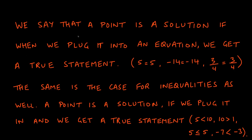A point is a solution to an equation if plugging it in gives a true statement — like 5 = 5 or -14 = -14. The same rule applies to inequalities: a point is a solution if it gives a true statement. For inequalities, true statements look like: 5 < 10 (true), 10 > 1 (true), 5 ≤ 5 (true, because of the 'or equal to'), and -7 < -3 (true, because -7 is smaller).